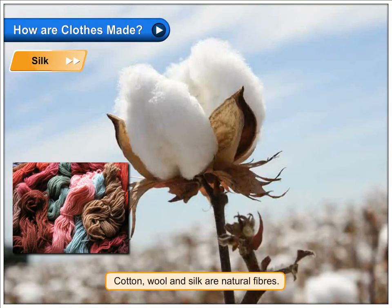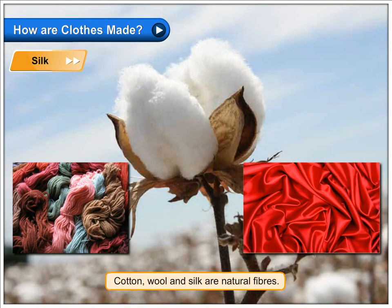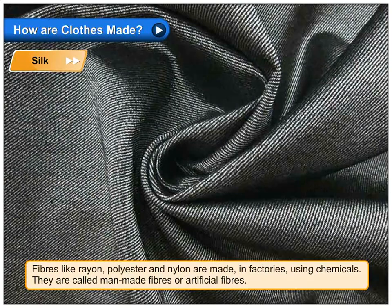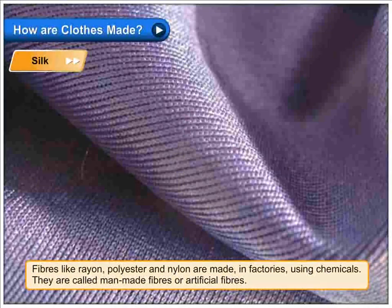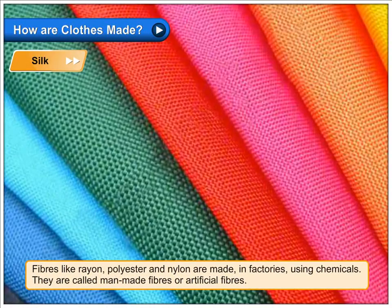Cotton, wool and silk are natural fibres. Fibres like rayon, polyester and nylon are made in factories using chemicals. They are called man-made fibres or artificial fibres.